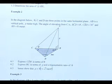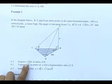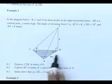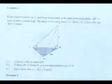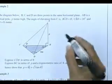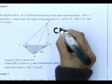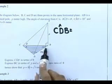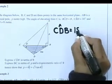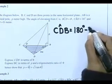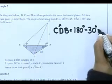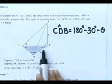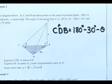I want to do this with you this afternoon. Express CDB. I made a little curve here. CDB in terms of theta. Do you know what I'm going to write? I'm going to say that CDB is equal to, in this triangle we know it's 180 minus 30 minus theta. Do you agree with me that that is how we're going to do CDB? Because angles in a triangle is equal to 180.